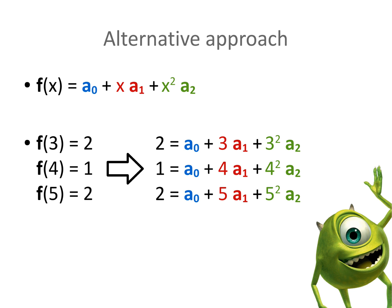Let's also get rid of the squared numbers and replace them with 9, 16 and 25. Now we can clearly see that we have 3 different equations with 3 unknown parameters a0, a1 and a2.